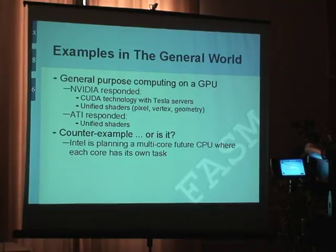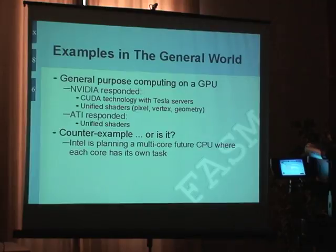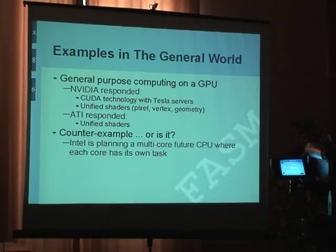Now the question is, is Intel making a counter-example? Because it's planning a multi-core CPU in the future where each core has its own assignment — one is for floating point, one is integer. But I think it's even more general because it's only one CPU and you can use it to do many things, starting from integer and maybe even assignments that you can't imagine today.